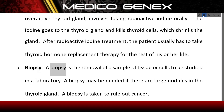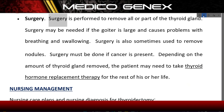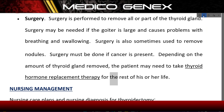Biopsy: A biopsy is the removal of a sample of tissue or cells to be studied in a laboratory. A biopsy may be needed if there are large nodules in the thyroid gland, and is taken to rule out cancer. Surgery: Surgery is performed to remove all or part of the thyroid gland. It may be needed if the goiter is large and causes problems with breathing and swallowing, or to remove nodules, or if cancer is present. Depending on the amount of thyroid gland removed, the patient may need thyroid hormone replacement therapy for life.